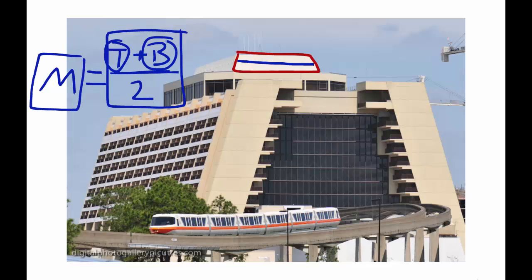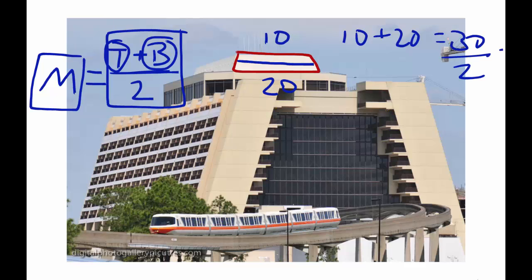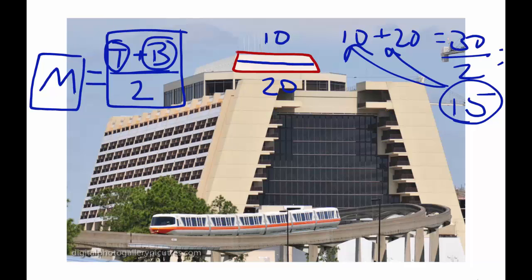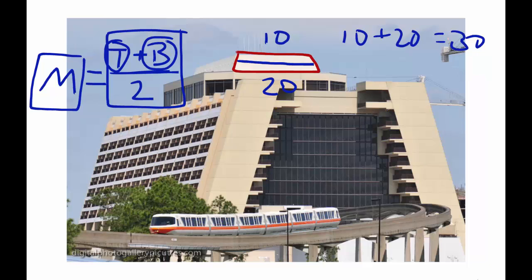So if the top length is 10 and the bottom length is 20, you take 10 plus 20 to get 30, then divide 30 by 2 to get 15. And indeed, 15 is the average of 10 and 20 — simple enough.